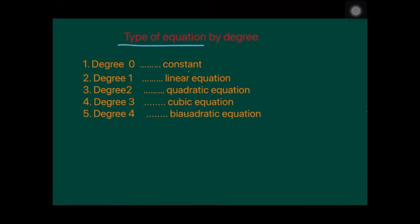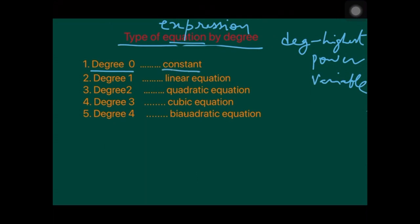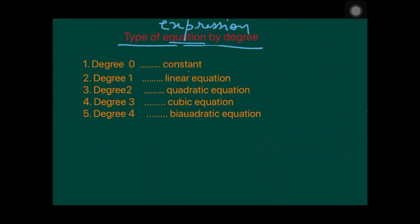Now, the types of equations by degree — you can also call them types of expressions or polynomials. The degree is the highest power of the variable. If the degree is 0, it is known as a constant — for example, just 5, where there is no variable. If the degree is 1, it is called a linear equation.